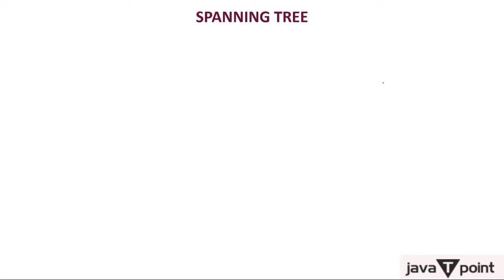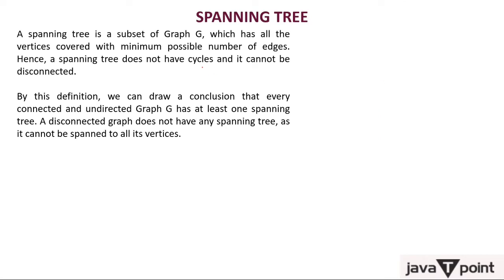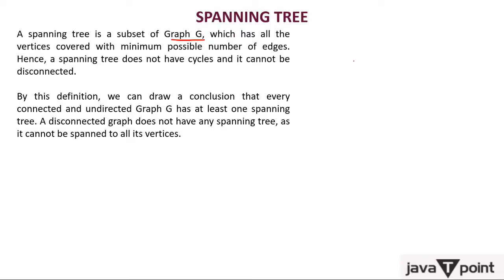What is a spanning tree? A spanning tree is a subset of a graph. A tree does not have a closed path, but a graph can have a closed path. So a spanning tree is a subset of a graph which has all the vertices covered within the minimum possible number of edges.